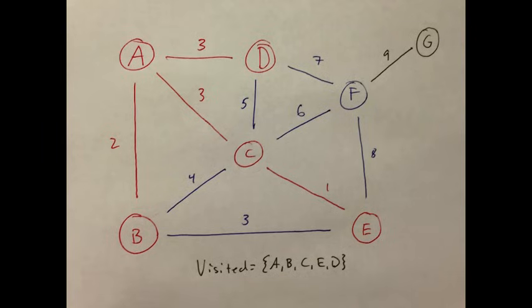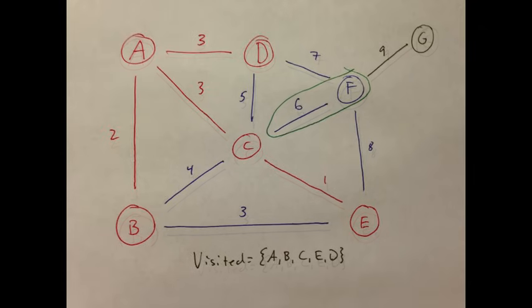Notice at this point, the edge BE with a weight of 3 is the smallest edge. But both vertices are already in the MST, so we do not pick it. Instead, we will choose to add F to the MST.